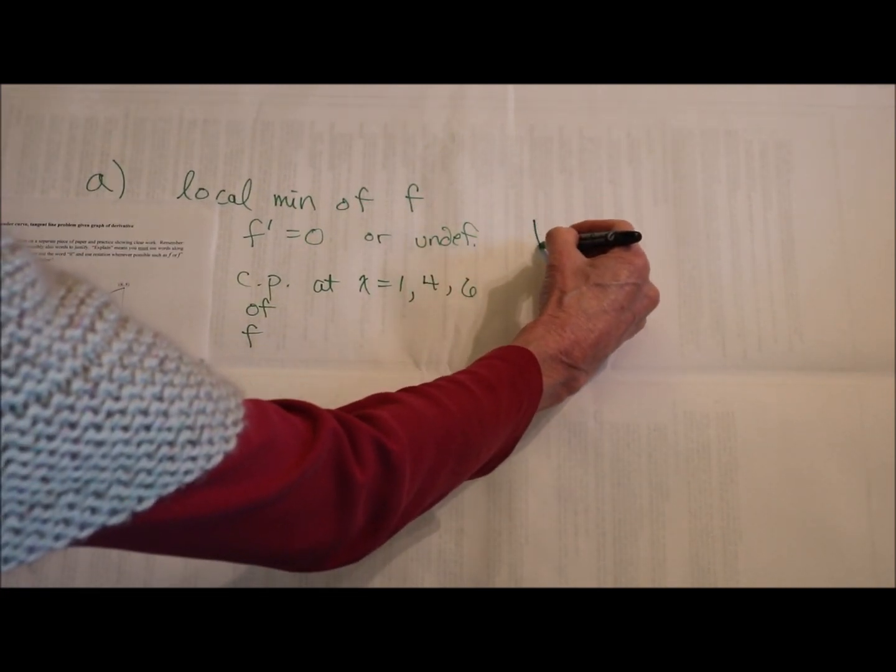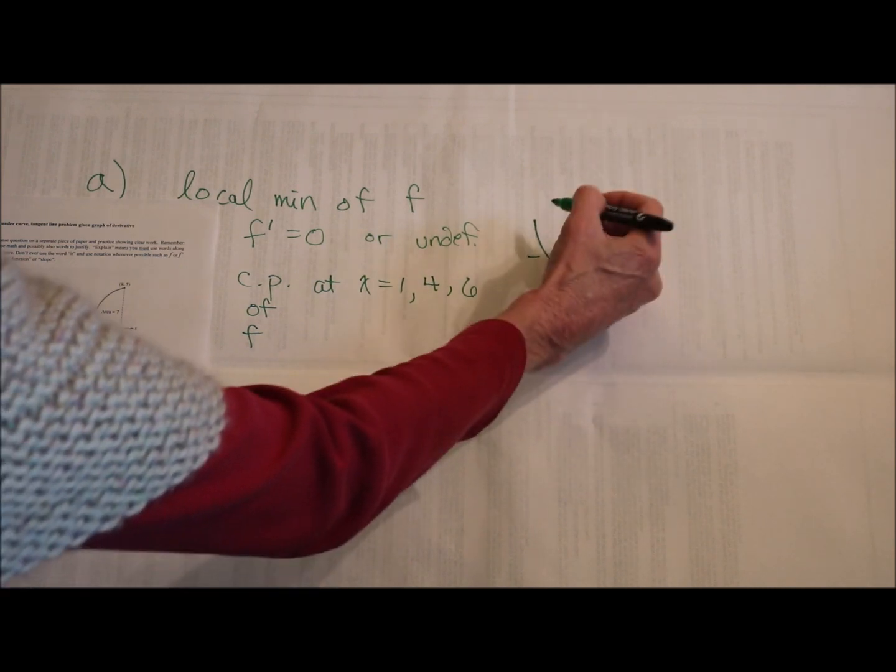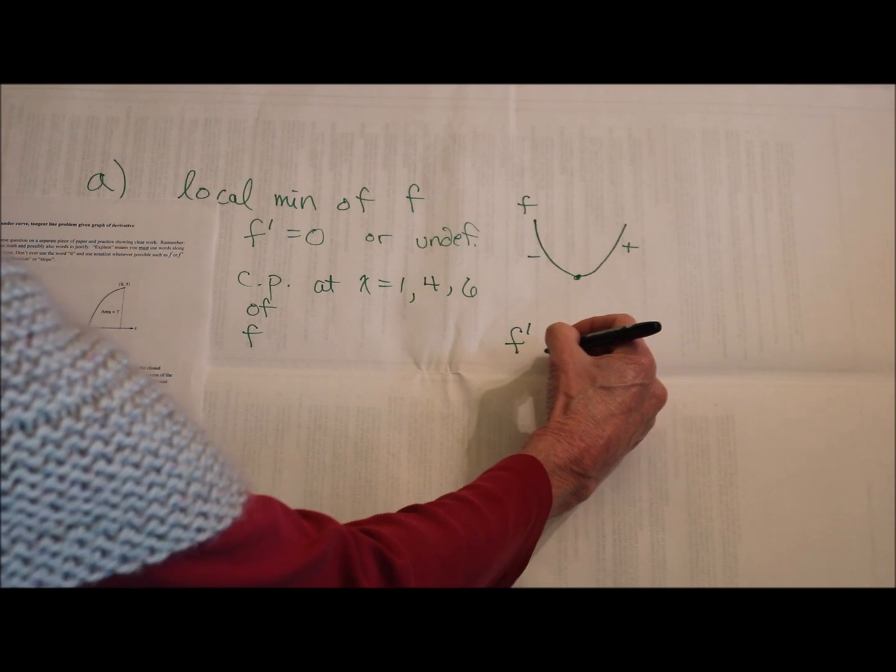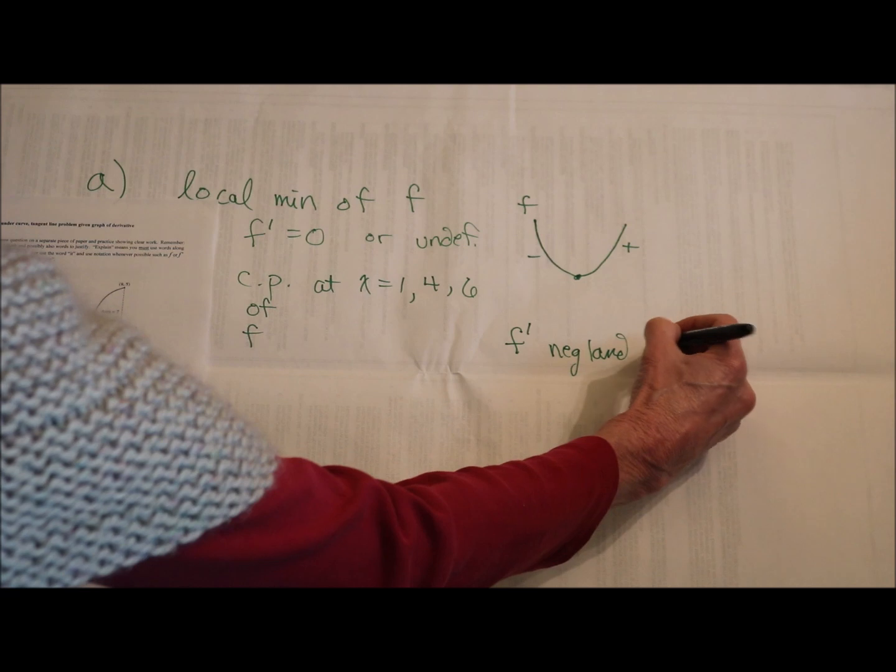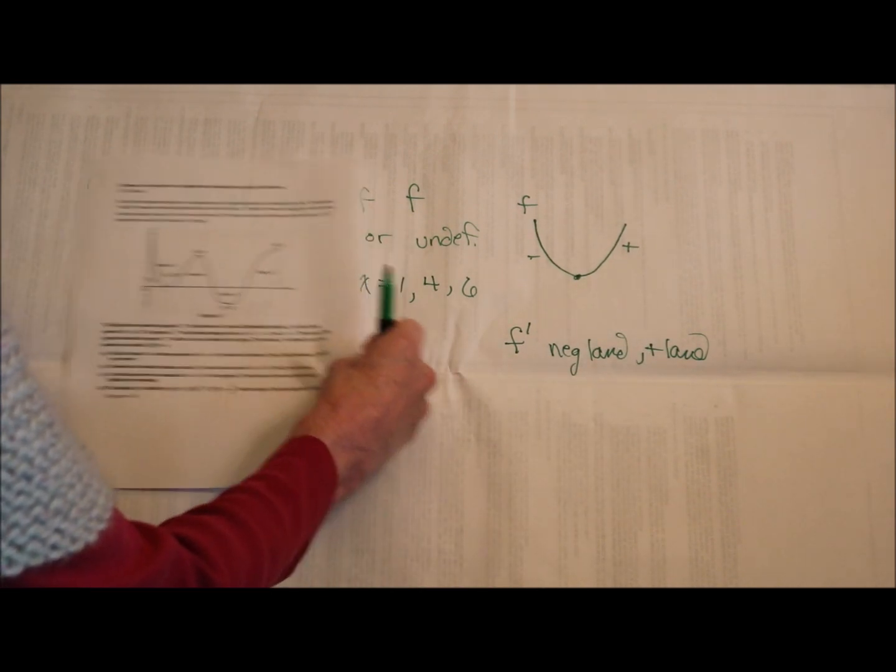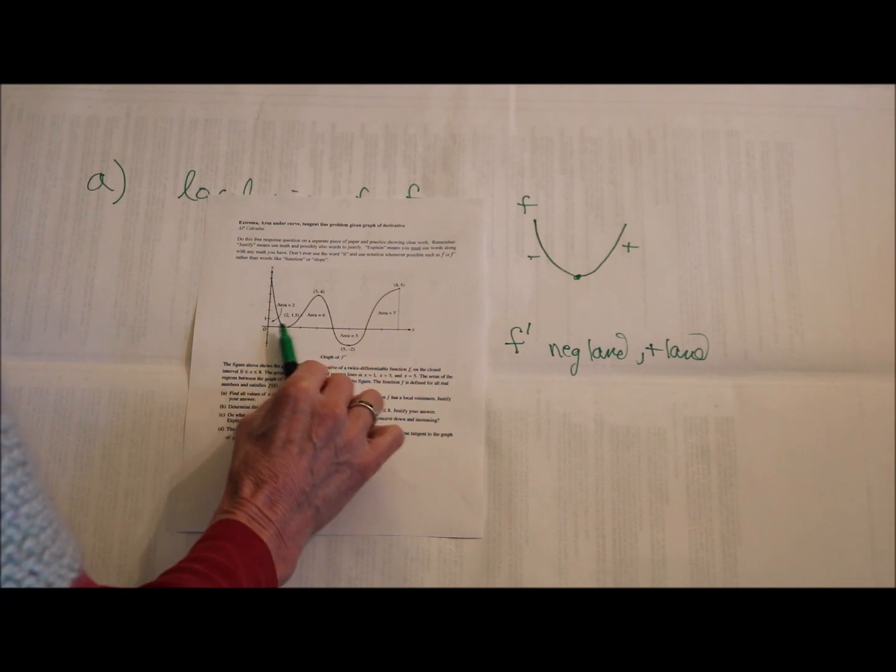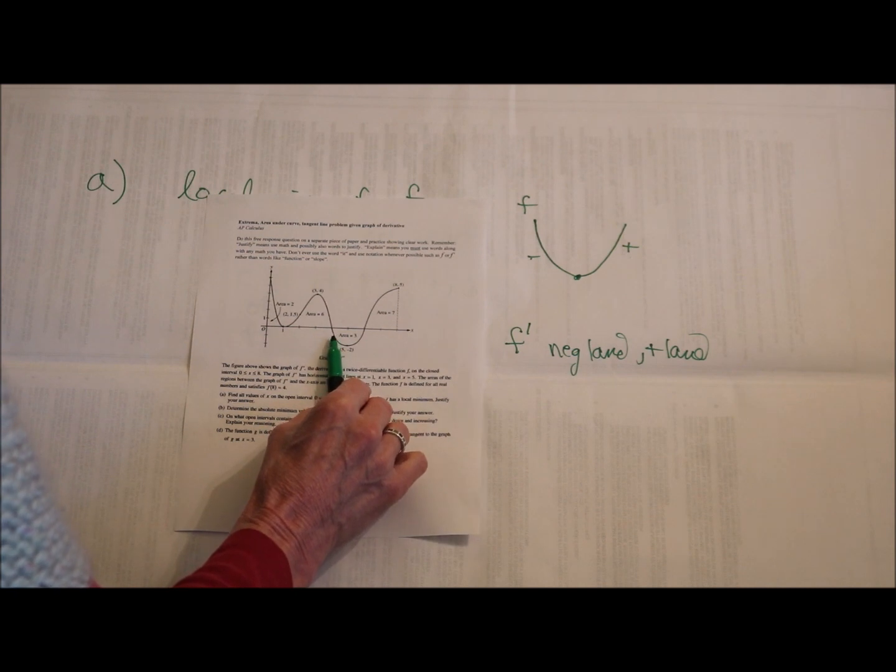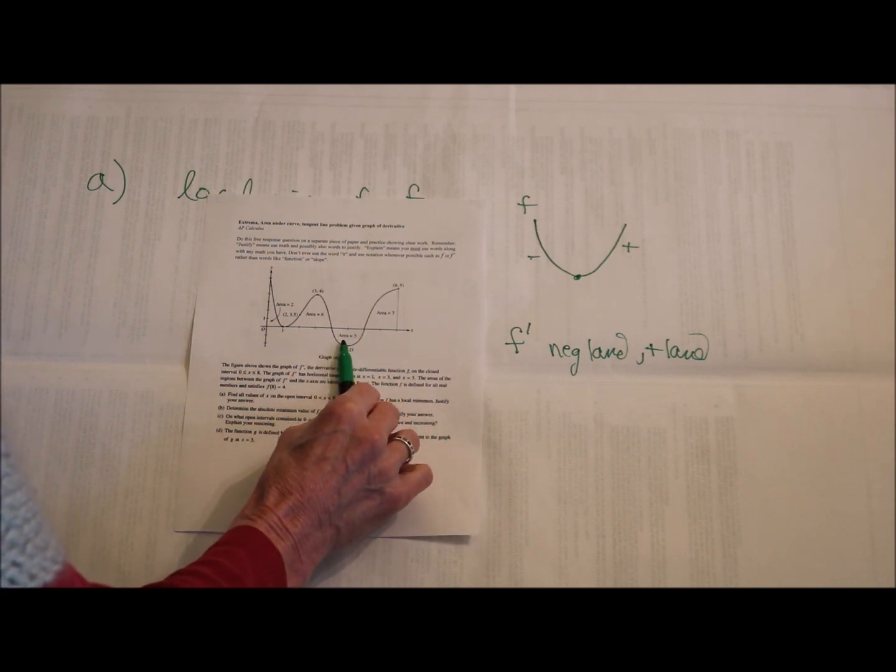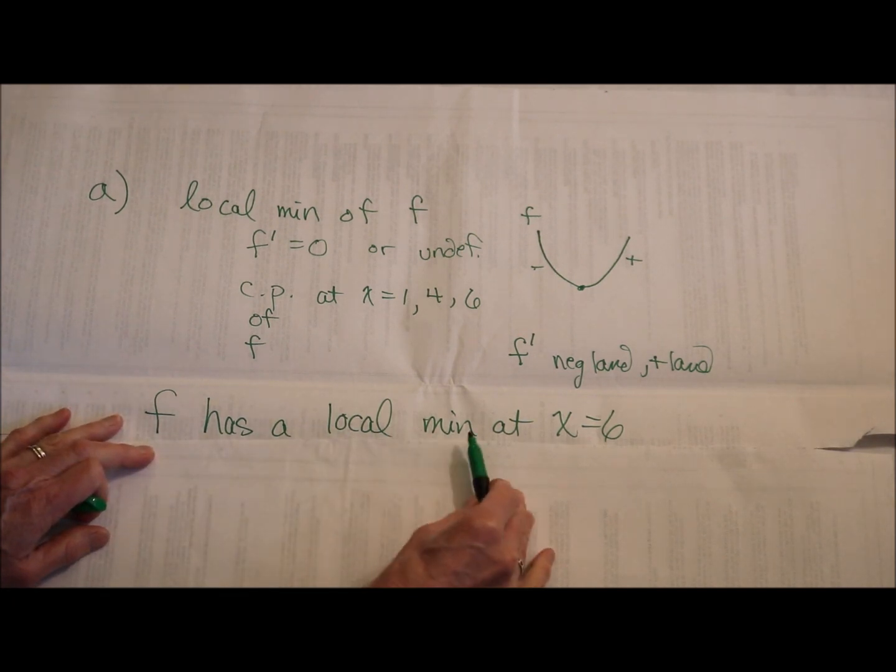Remember, a minimum happens when your slope or your derivative is negative, and then your slope of your function, also known as your derivative, is positive. So if I'm looking at a graph of my derivative, I want to be in negative land and then in positive land. Here I'm in negative land, then positive land. So look at these critical points where x is 1 - my derivative is in positive land before it and positive land after, so that's not a min or a max. Let's look where x is 4. I'm in positive land and then in negative land - that would give me a local maximum. When x is 6, my derivative before that is in negative land and my derivative after that is in positive land. That is a local minimum. So f has a local min at x equals 6.